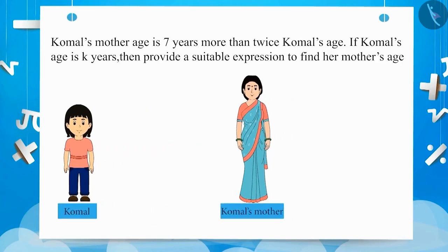As we know, Komal's age is k years and Komal's mother's age equals 7 more than twice Komal's age, which is 2 multiplied by k plus 7, equal to 2k plus 7. Therefore, the expression to find her mother's age will be 2k plus 7.